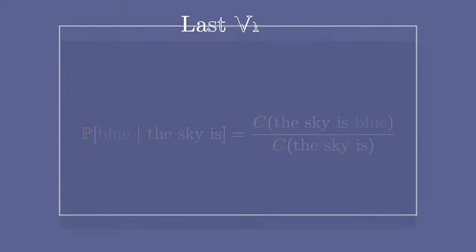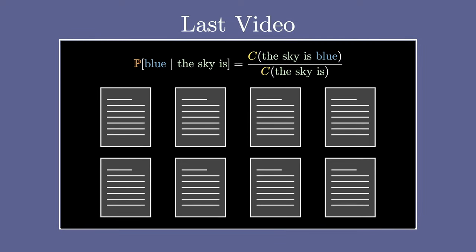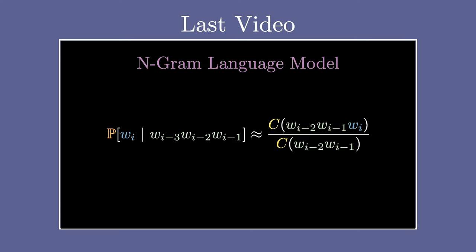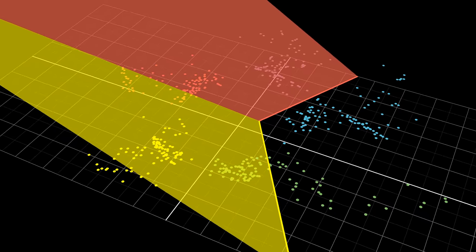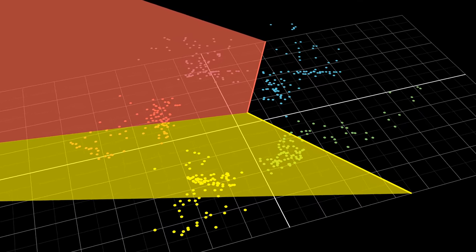In the last video, the way I got this probability was by collecting a lot of text and counting the number of times the sequence appeared in that text, dividing by the number of times the context appears. We call this an n-gram language model. A big issue that neural networks try to fix is when the context just doesn't appear. This is the main strength of neural networks — if I show the network a bunch of similar examples, it's able to learn from that data.